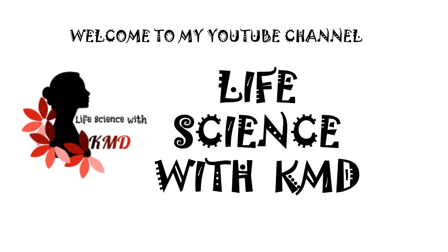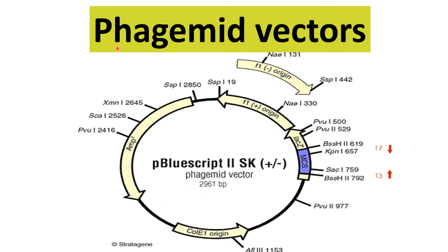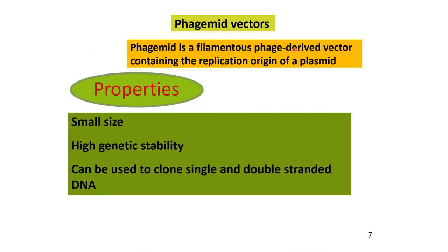Hello everyone, welcome to my YouTube channel Life Science with KMD. Today I am going to explain about phagemid vectors. Phagemid is a filamentous phage derived vector containing the replication origin of the plasmid.